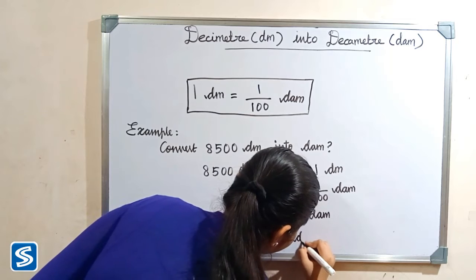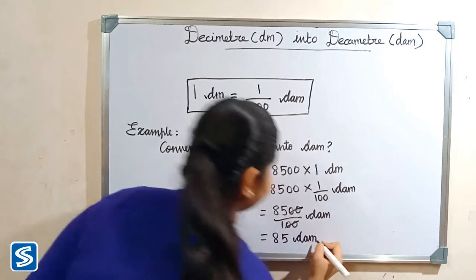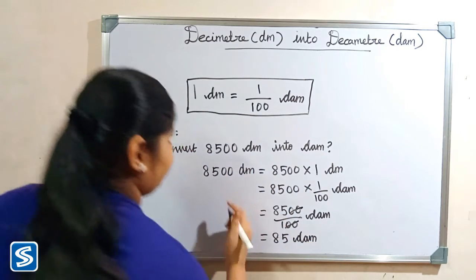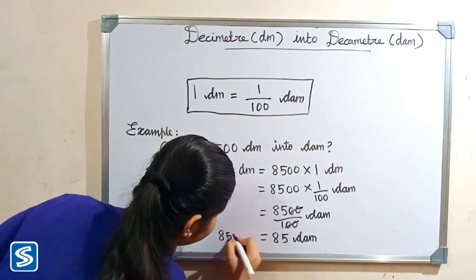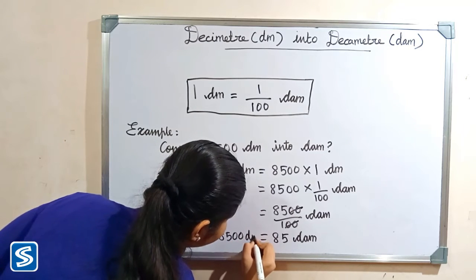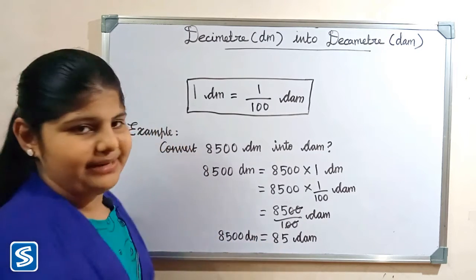So 85 decameter. So 8500 decimeter is equal to 85 decameter.